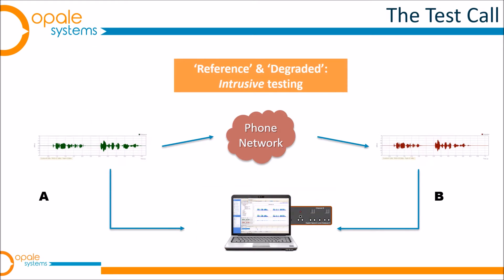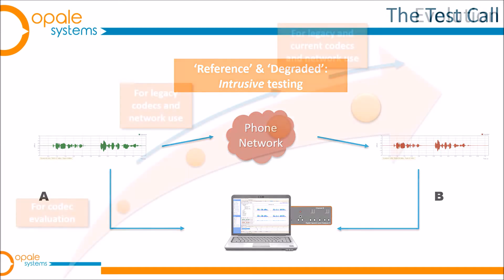Here is some of the terminology used in this kind of testing. We have the reference file — the clean speech signal injected at end A — and the corresponding degraded wave file, which is the recording of the speech that actually arrived at end B. It's the comparison of those two that leads to POLQA or PESQ generating an estimate of Mean Opinion Score. This is also called intrusive testing, because it uses an instrument making a dedicated test call rather than two human users.